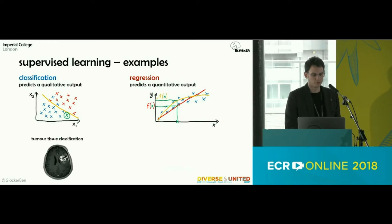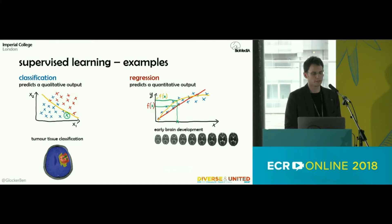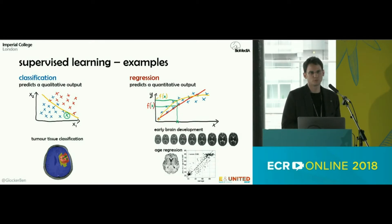Some examples from the medical domain: tumor tissue classification given an MRI brain scan is a classification problem where every point in the image is classified into different tissue type categories. In regression, we can look at brain development to predict whether a baby is developing normally, or do age regression — given an MRI scan, predict the patient's age. If the predicted age differs from the chronological age, that may indicate anatomical abnormality.